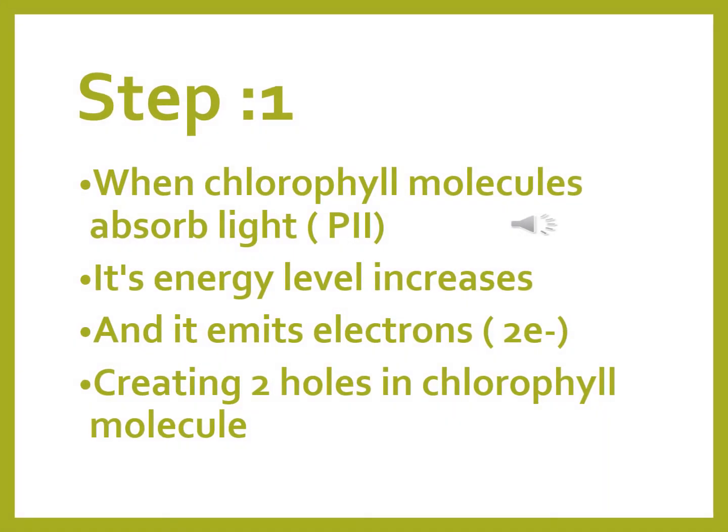There are four basic steps in the light reaction. The first step is: whenever a chlorophyll molecule absorbs light, photosystem 2 is used first. Whenever it absorbs light, its energy level increases, it gets excited, and it emits electrons — 2 electrons, because it is absorbing 2 photons of light energy. This creates 2 holes in the chlorophyll molecules, because 2 electrons are emitted after striking light.